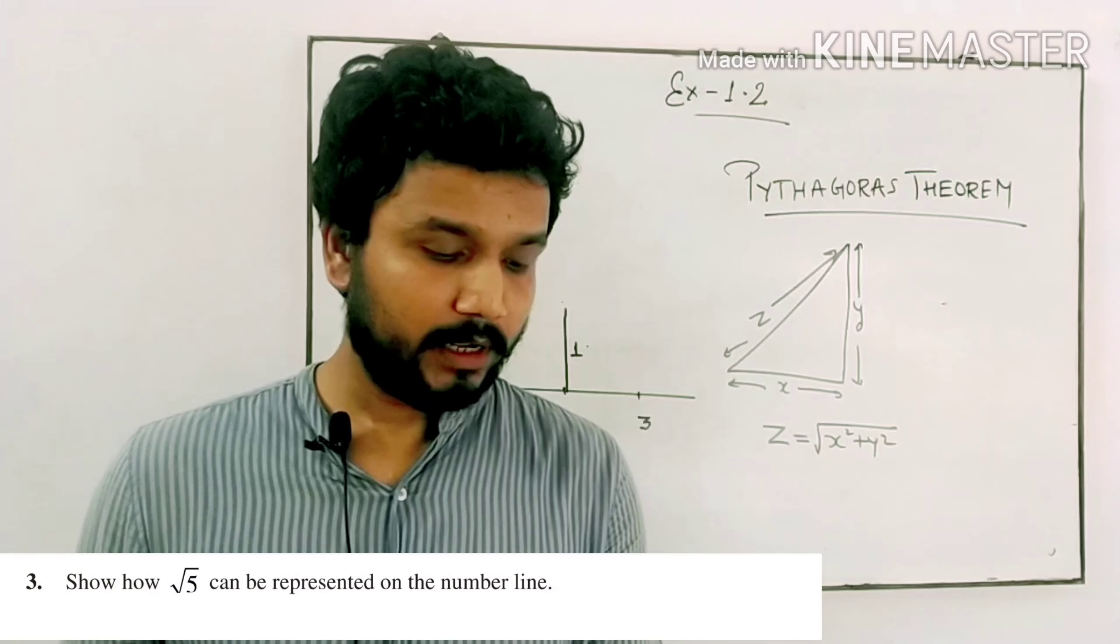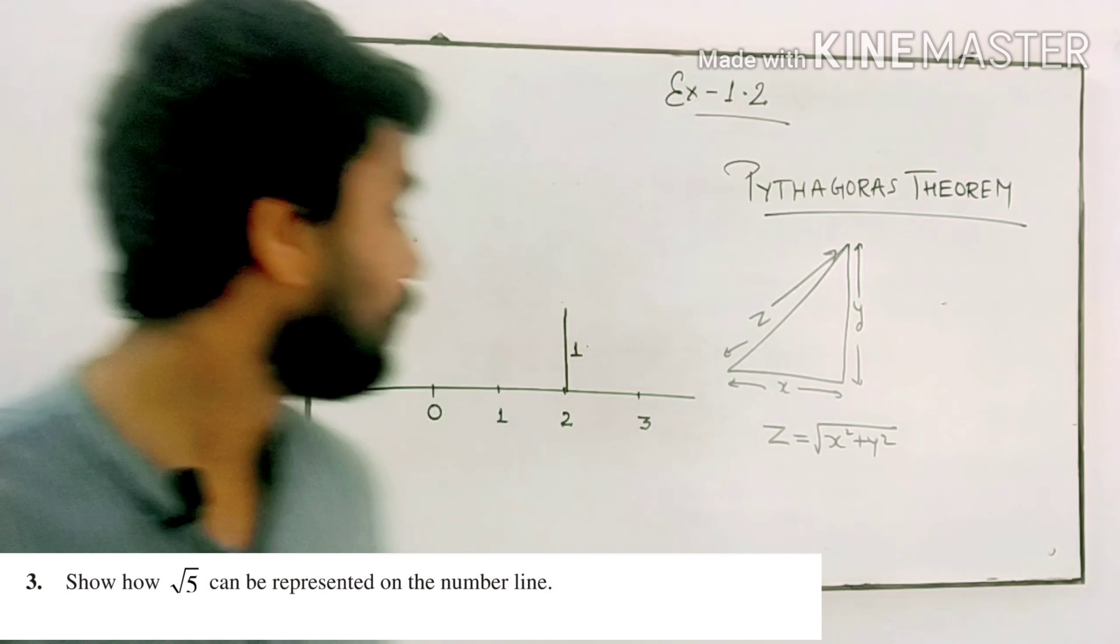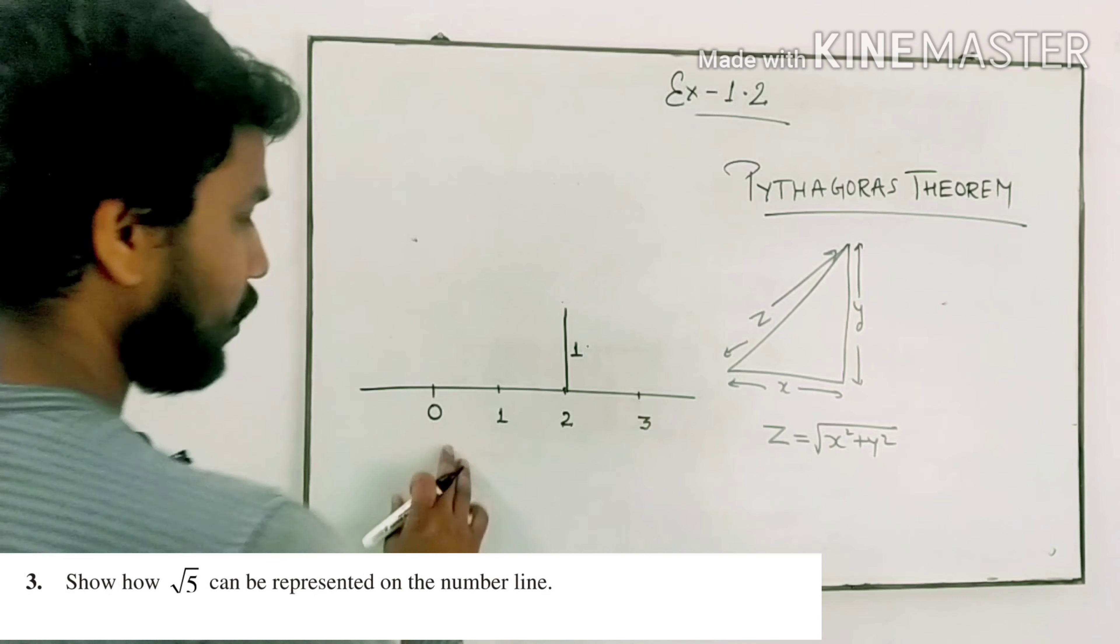Question number 3: Show how root 5 can be represented on the number line. So this number line is 0, 1, 2, 3.